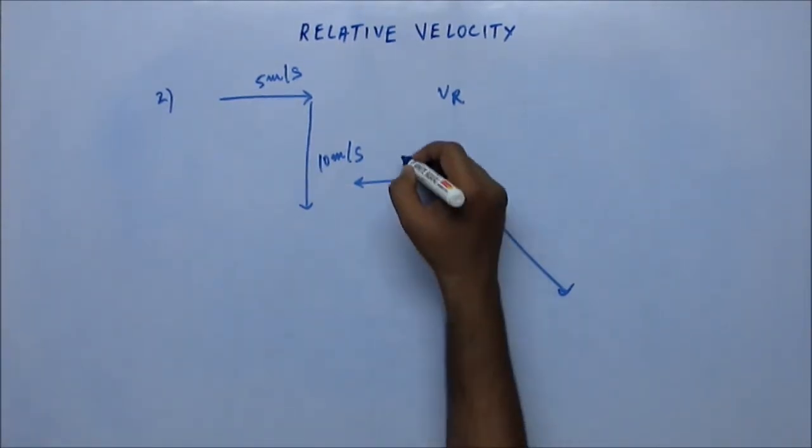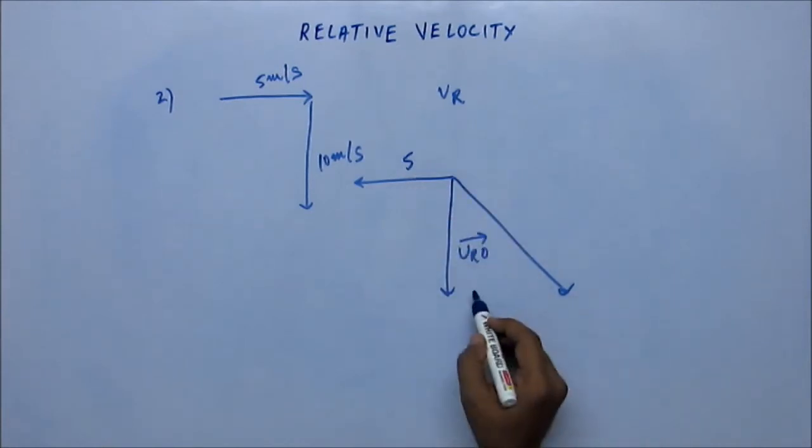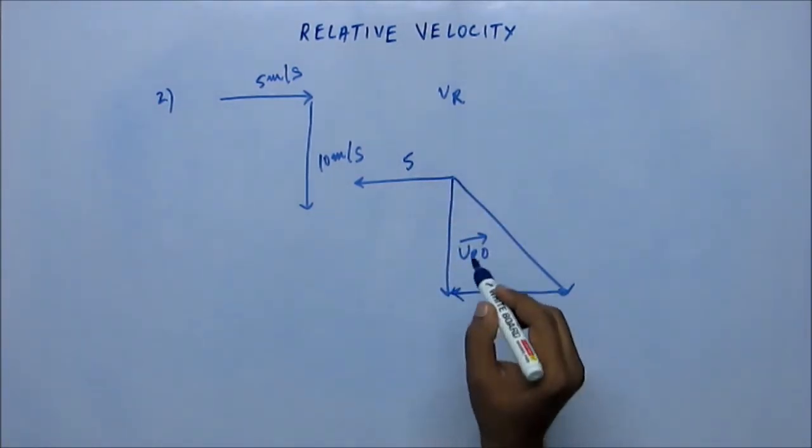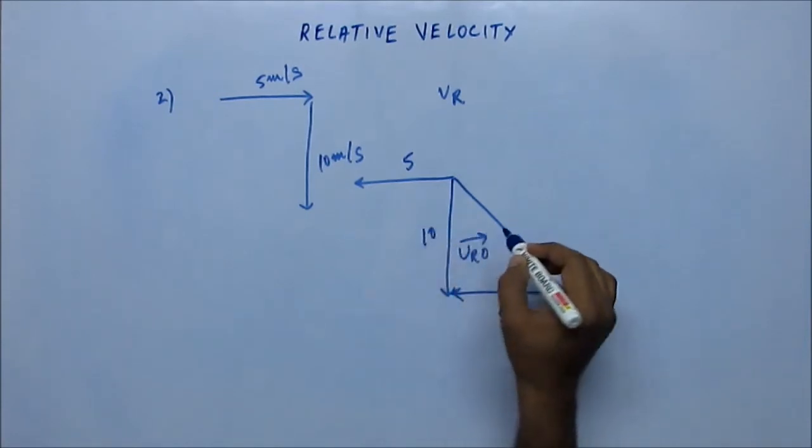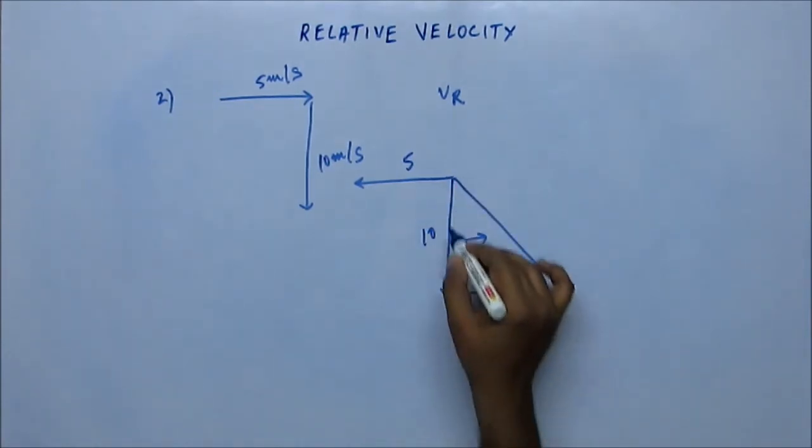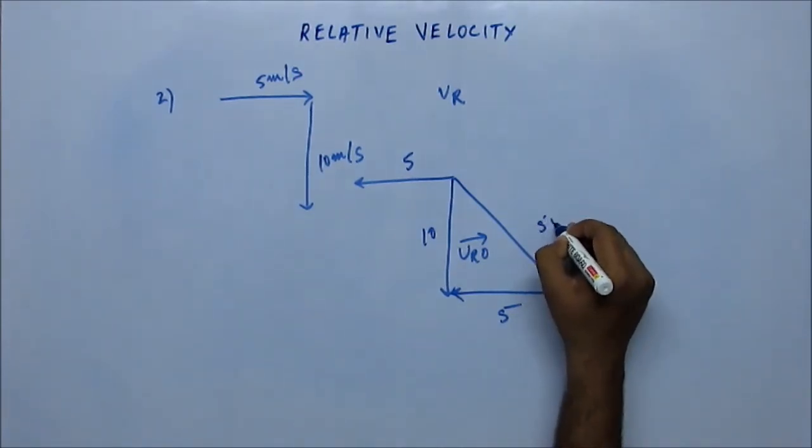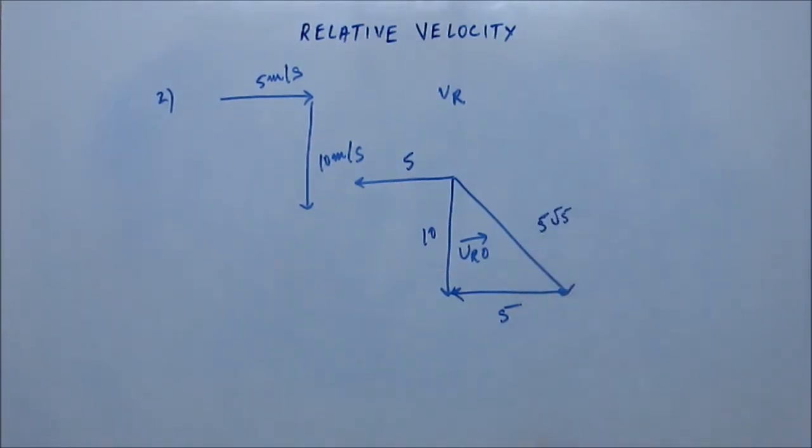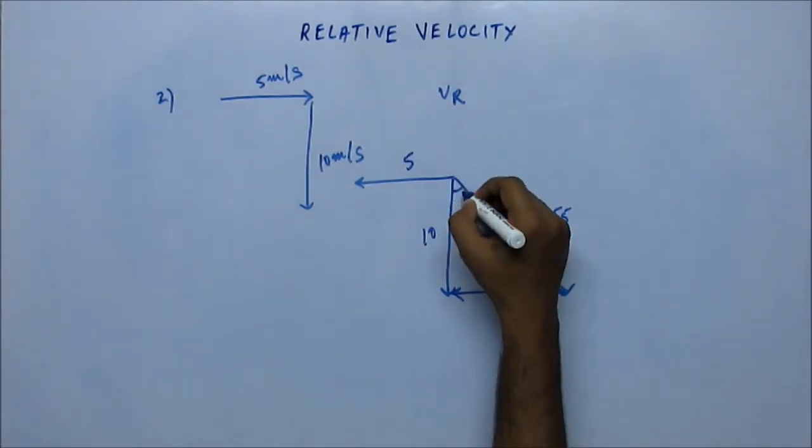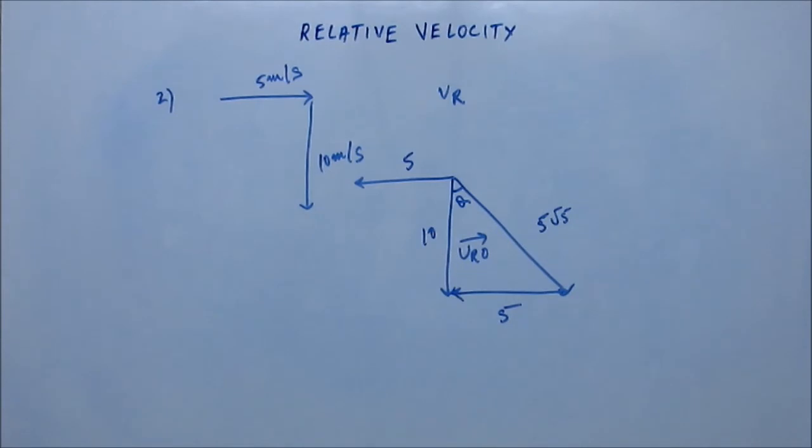This is the velocity of observer. Minus velocity of observer would be on the other side, this must be 5. Shifting it here, this must be 5 and this is given as 10. They are asking the hypotenuse of this right angle triangle. Finding that is very easy, this would be 5 root 5 using Pythagoras theorem.